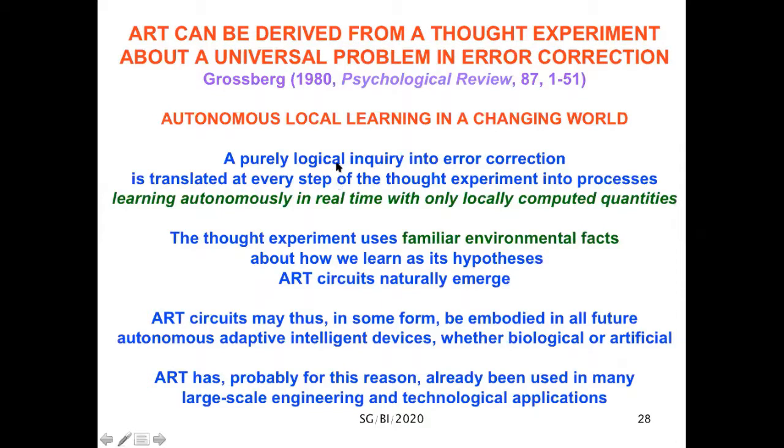ART tries to solve the problem of autonomous local learning in a changing world. A purely logical inquiry into error correction is translated at every step of the thought experiment into processes learning autonomously in real time with only locally computed quantities. Moreover, the thought experiment uses familiar environmental facts about how we learn as its hypotheses to derive ART, and the ART circuits naturally emerge from things that we all know because they're facts that are ubiquitous in our daily experience. ART circuits may thus in some form be embodied in all future autonomous adaptive intelligent devices, whether biological or artificial, and ART has perhaps for this reason already been used in many large-scale engineering applications.